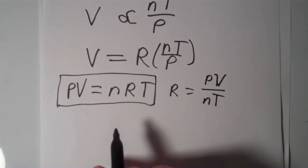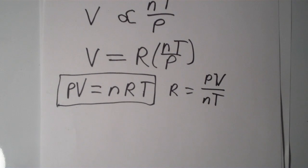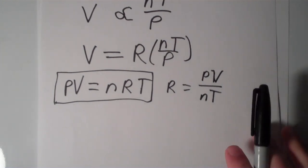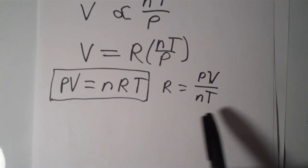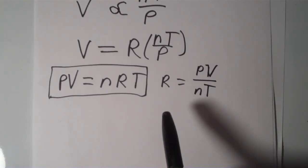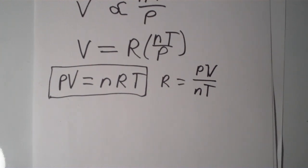And so depending on the units of pressure, volume, amount, and temperature, depending on those units, the value of the ideal gas constant R can have many different units as well.